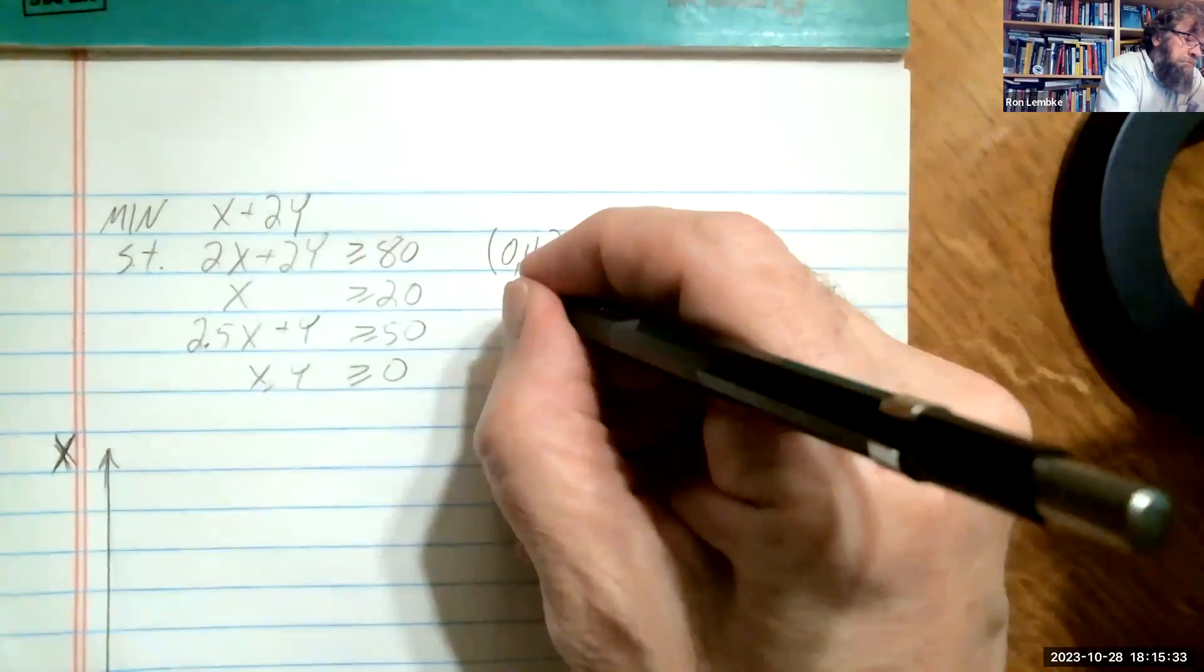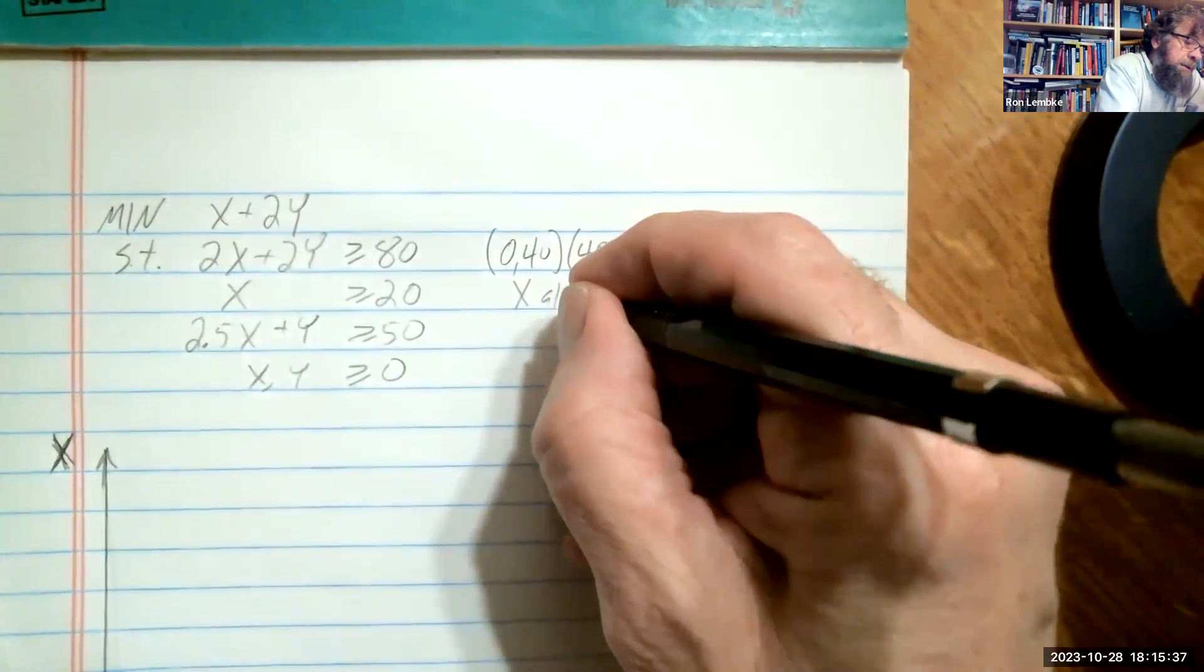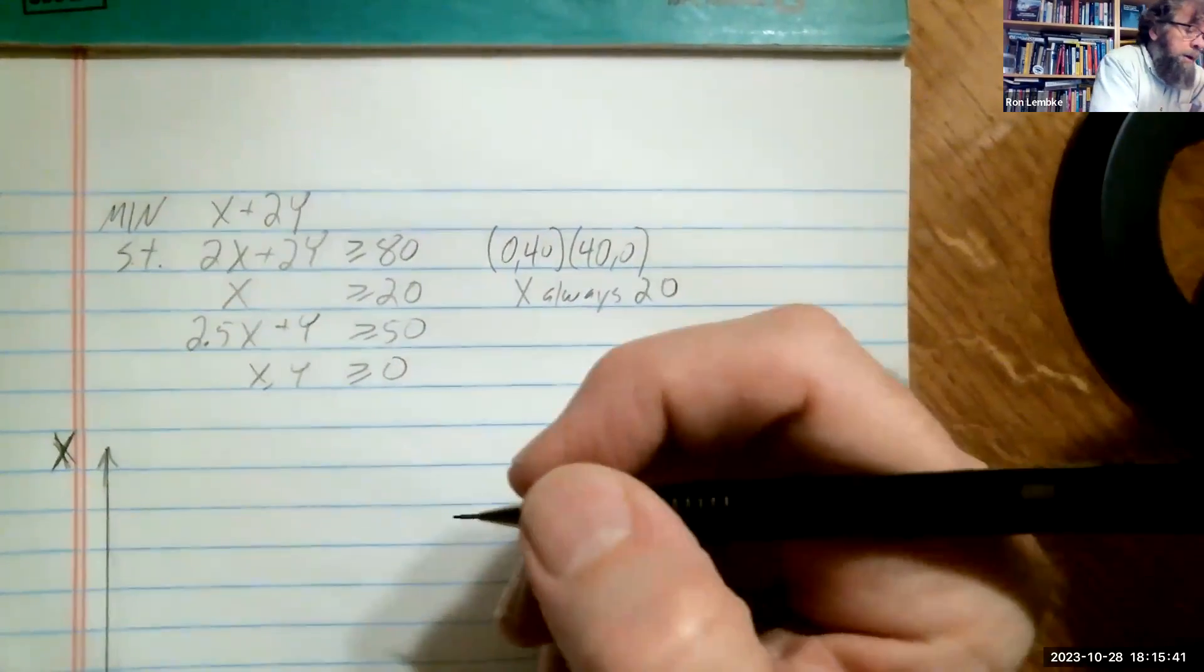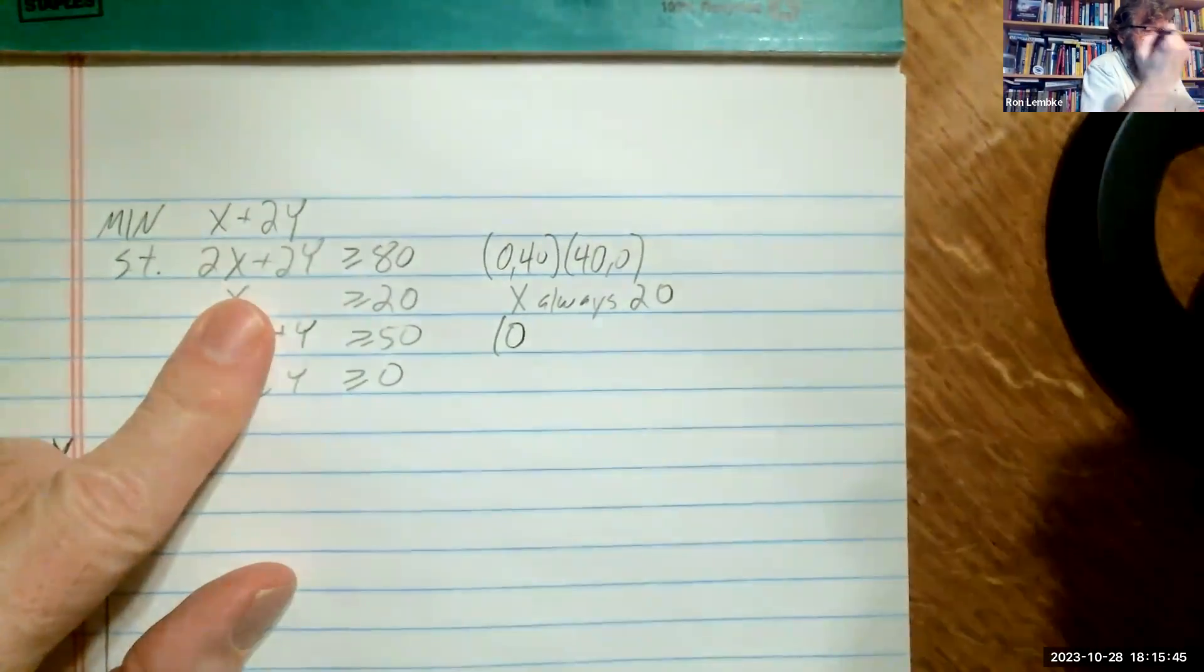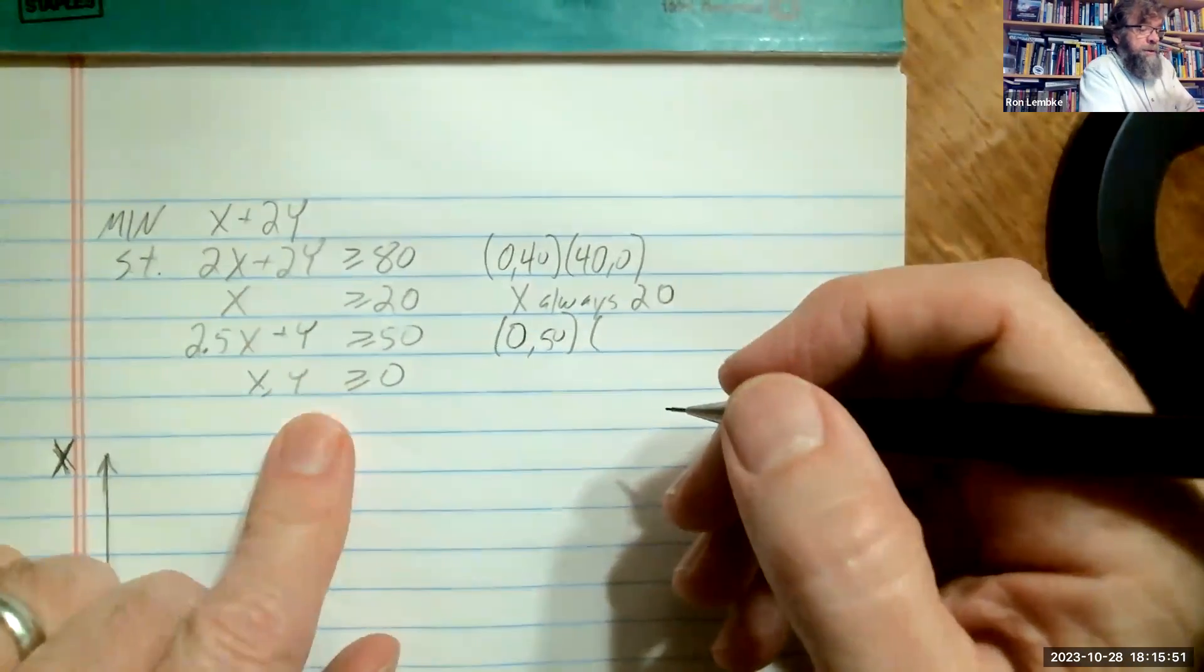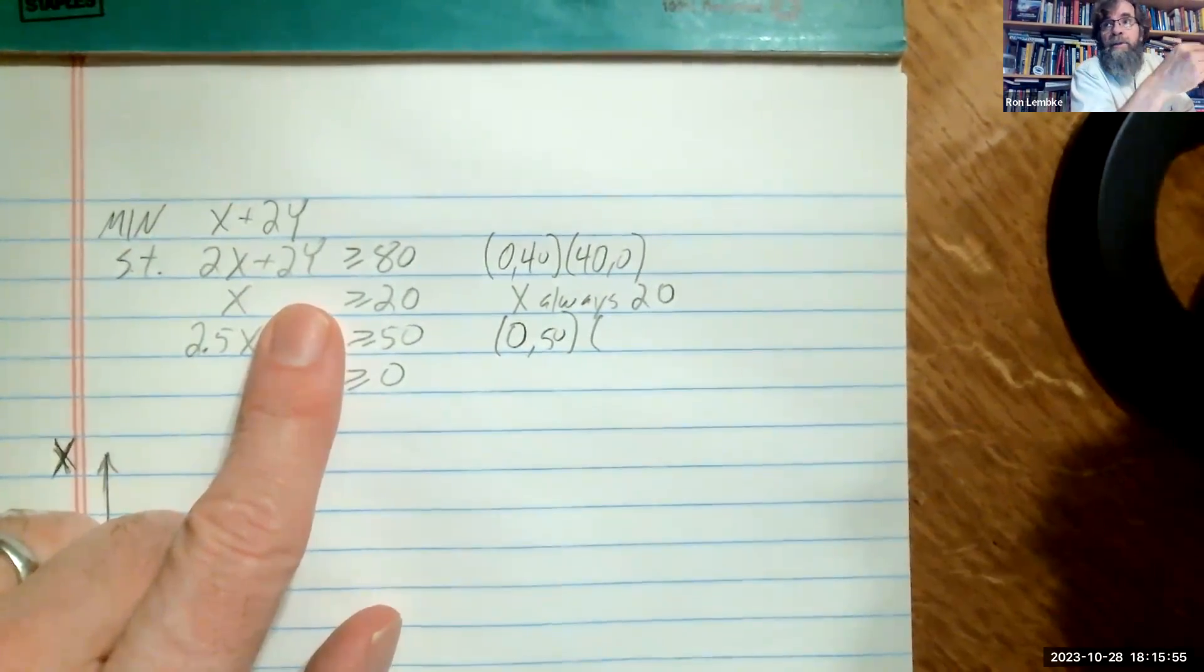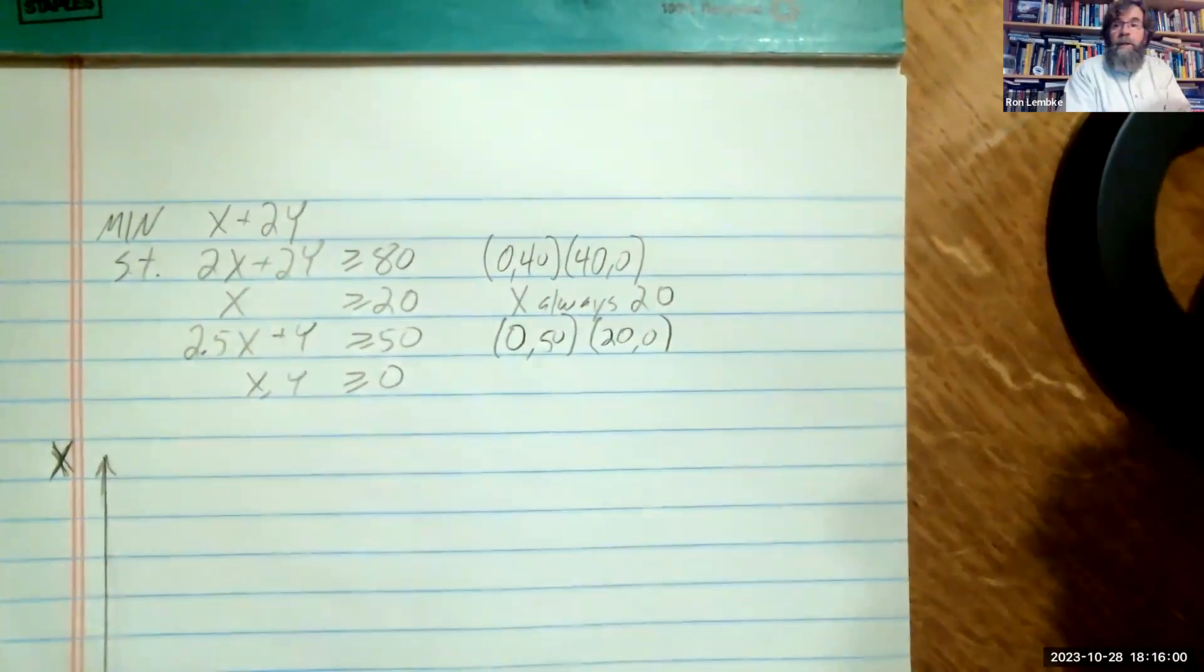Then the next constraint is really pretty easy. x is always equal to 20. On our next constraint, we put in 0 for x, and we just get that y equals 50. And then if we put in a 0 for y, we have 2.5x equals 50. So divide both sides by 2.5, and we get that x equals 20.